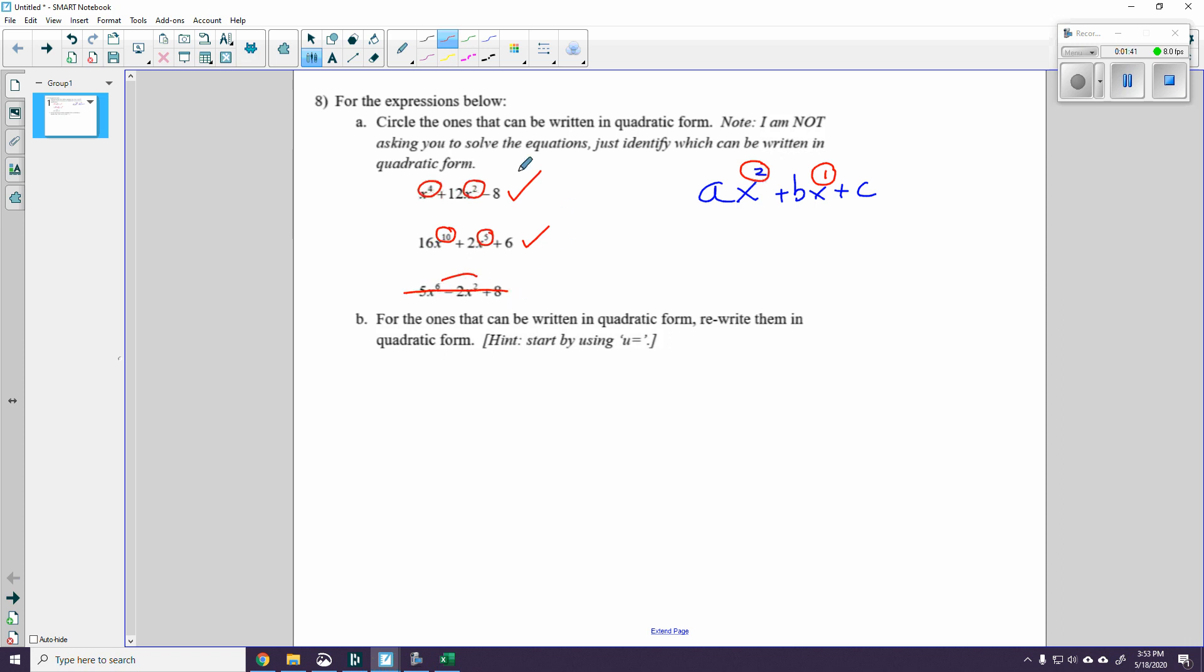So now that we know which ones can be written in quadratic form, how do we actually do it? The way that I like to do it is by using a substitute variable u. So I'm going to do this one first. I take the middle power here, which is x squared, and I set that equal to u.